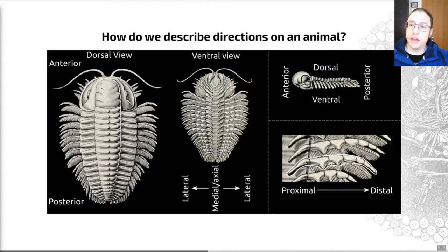On this trilobite you can see I've labeled a number of different bits. The first thing to consider is anterior and posterior. We use anterior to describe the front of an organism. In a bilaterally symmetrical organism, this will usually be where its eyes, mouth, and other sensory organs are located on some form of a head. The posterior will often be where something like a tail is located. So anterior is front and posterior is back.